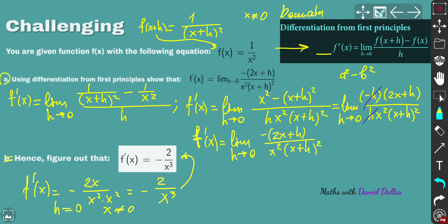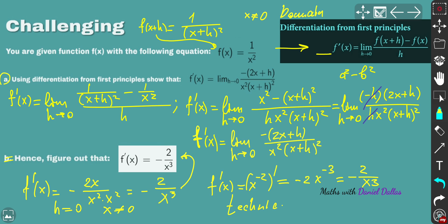For those who already know derivative techniques, let's verify: write f(x) = x⁻², take the derivative to get -2x⁻³, then flip back to get -2/x³. This confirms the result and takes only seconds. However, proving it from first principles takes much more time. Make sure you've got the concept.